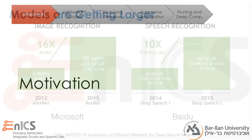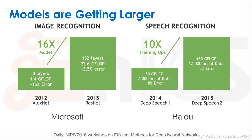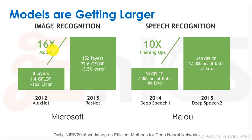Let's start with the motivation. As we've discussed in the previous lectures, models keep getting larger. We see some data from Microsoft about image recognition — it's a bit old, from 2016, but this is a common trend. AlexNet was eight layers, had 1.4 gigaflops, and about a 16% error. ResNet came out in 2015, already had 152 layers, 22.6 gigaflops, to provide a 3.5% error. That's a 16x increase in model size.